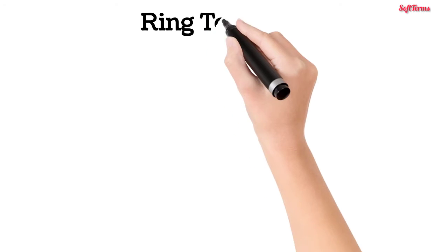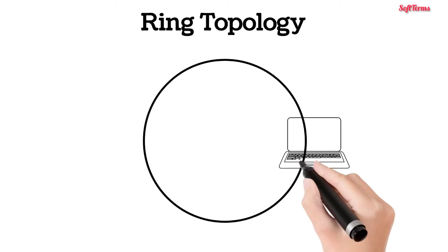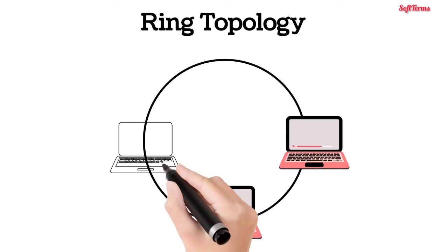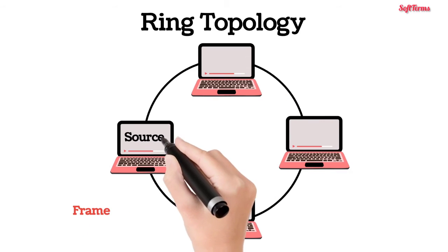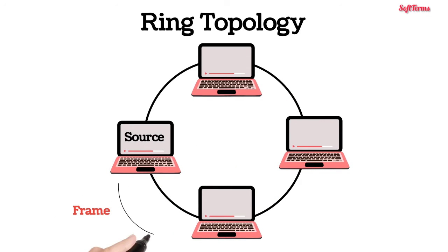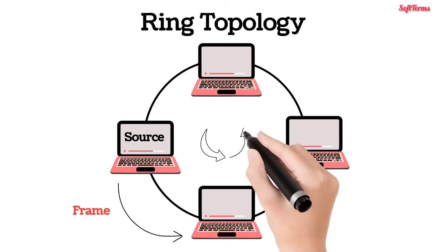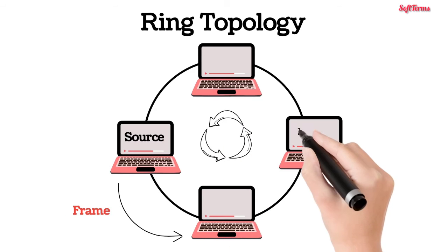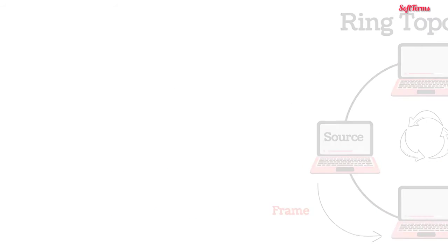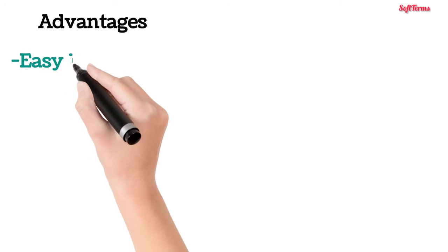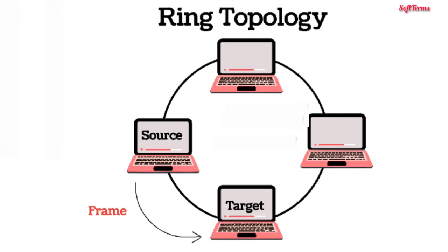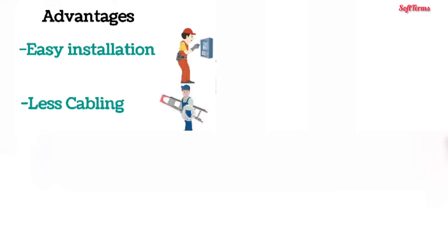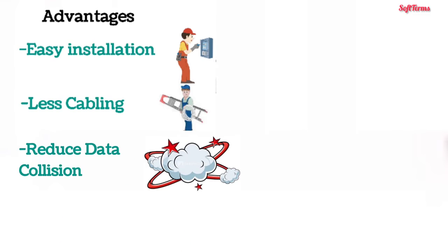Now ring topology. In a ring topology, each computer connects to two adjacent computers to form a ring. Data transmitted by one computer moves from one computer to another in a circular fashion to reach its final destination. The advantages of ring topology are easy installation and less cabling. In this topology, data moves in one direction only, which reduces the chance of data packet collisions.